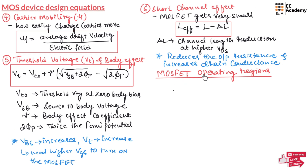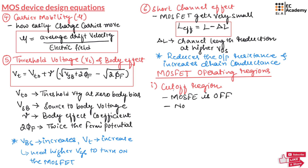Now let us understand the drain current equations for MOSFET operating regions. The first region is the cutoff region, where the MOSFET is OFF, meaning there is no conduction and the drain current Id is approximately equal to zero.